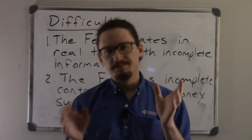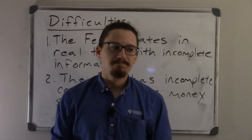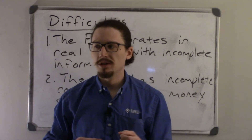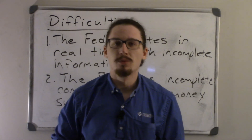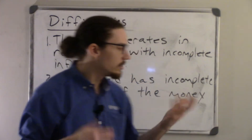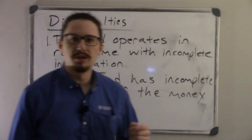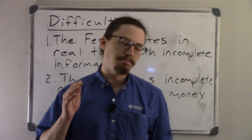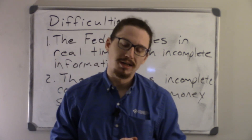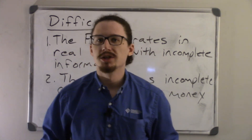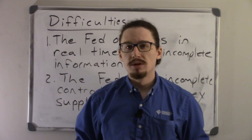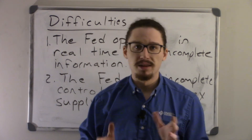There's something like the socialist calculation problem — essentially, there's too much information out there for one person or a group of people to efficiently direct an economy. The same thing happens here: there's a lot of information that the Fed could potentially get, but maybe it's too costly or time-consuming. There's also information pertinent to these decisions that they just can't get. With that incomplete information, it's going to be difficult to perfectly increase aggregate demand by the amount desired.